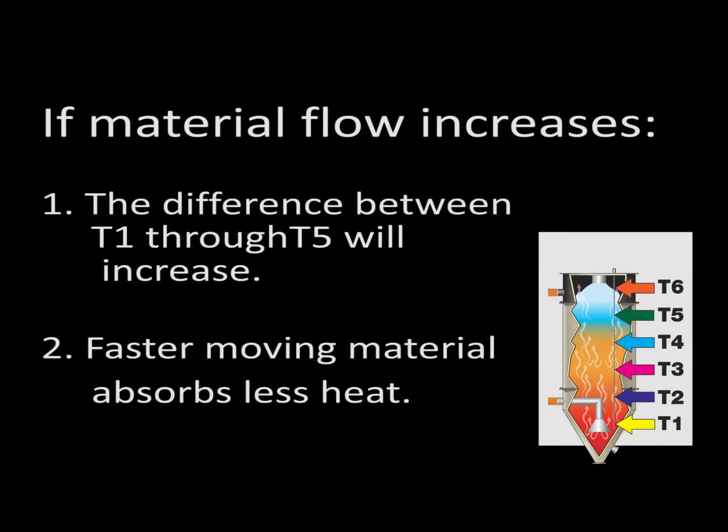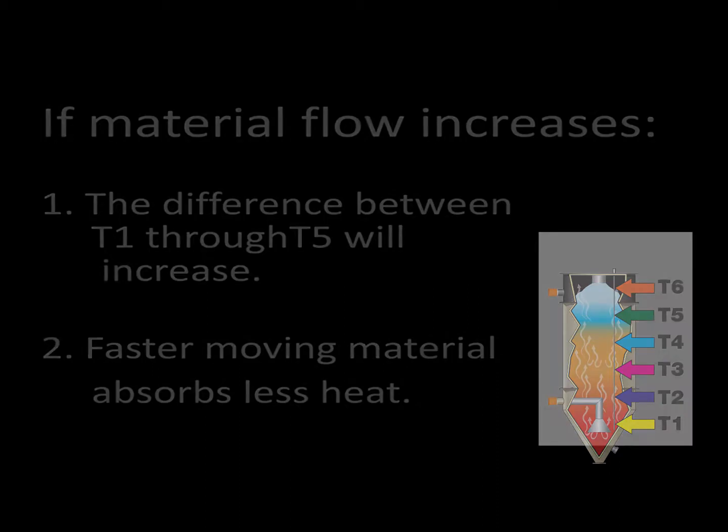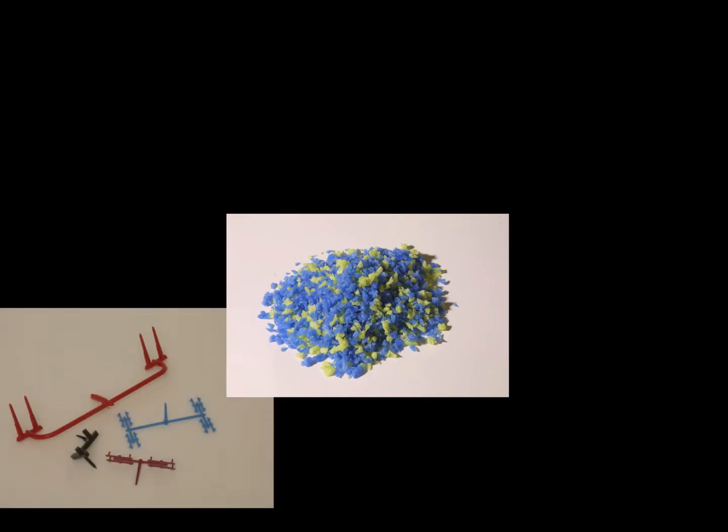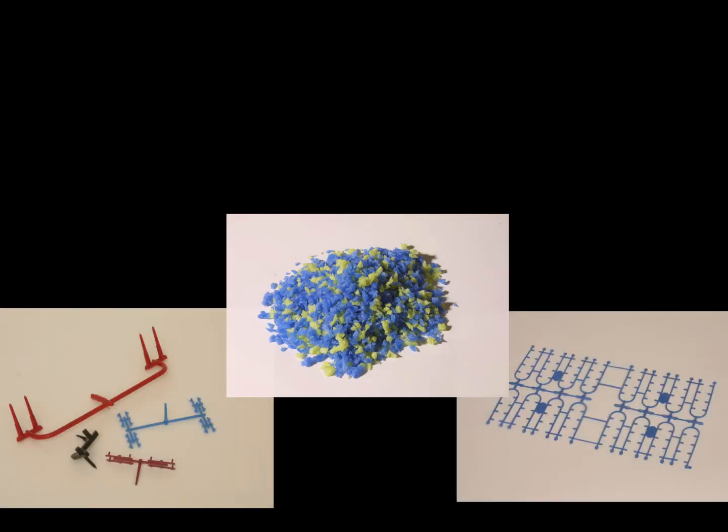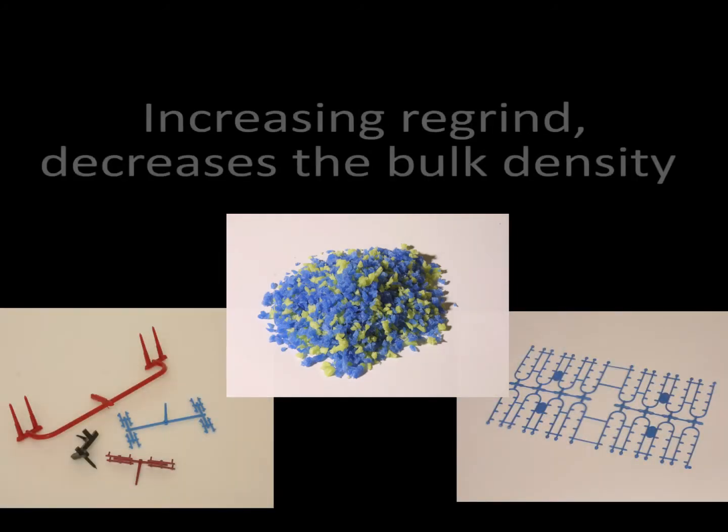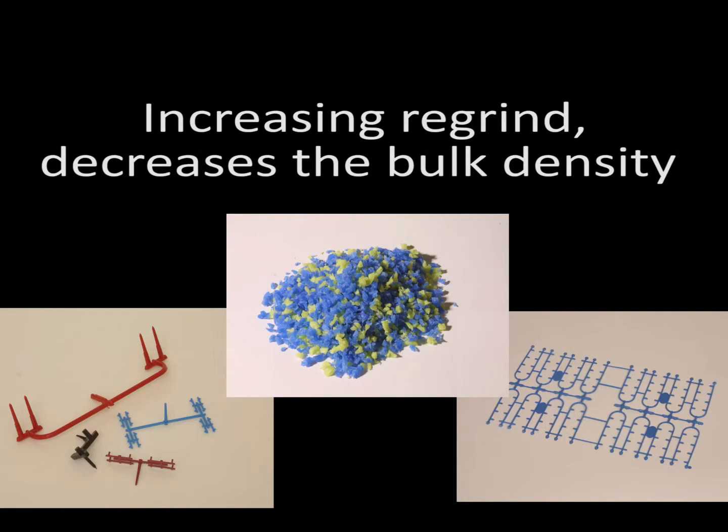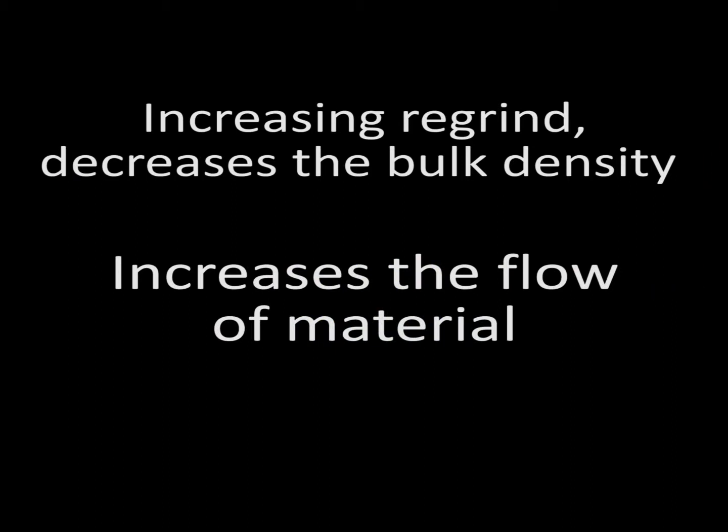If the material flow rate increases, the difference in temperature readings between T1 through T5 will steadily increase. The faster moving material now spends less time being heated, so the difference in temperatures read at the bottom of the hopper compared to the top will display a greater spread. This can also be the result of an increase in proportion of regrind material being dried. Increasing the quantity of regrind decreases the bulk density of the material being dried and increases the flow of material.